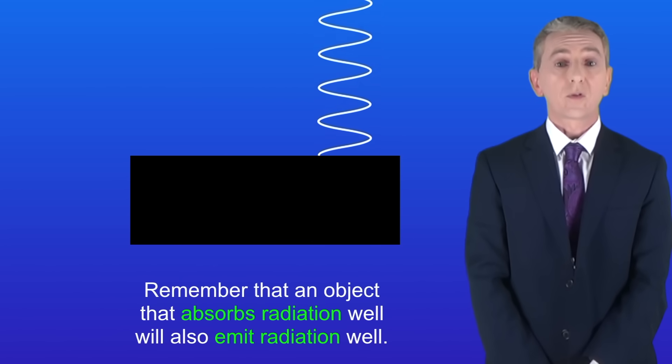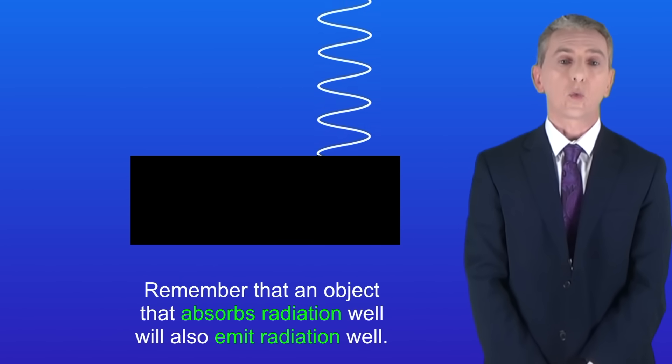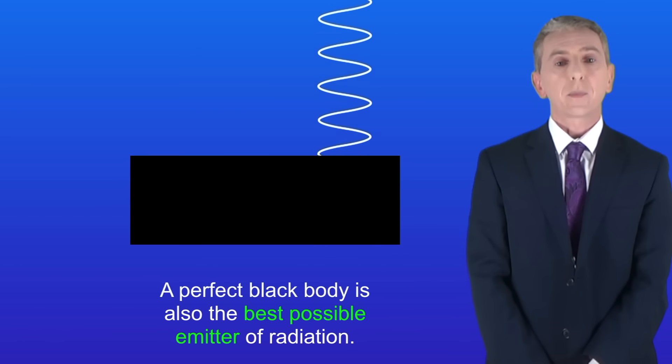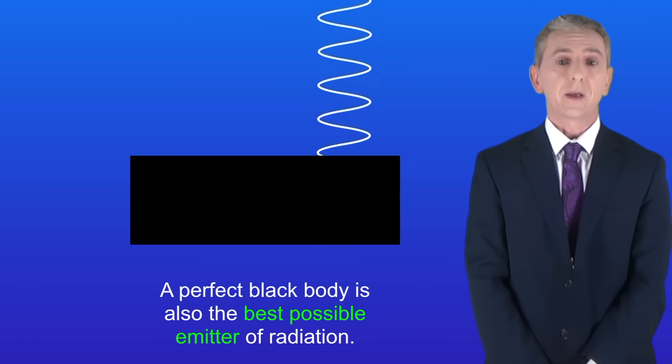Remember that an object that absorbs radiation well will also emit radiation well. So that means that a perfect black body is also the best possible emitter of radiation.